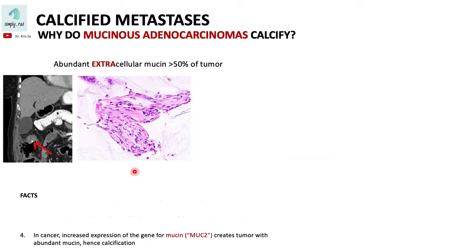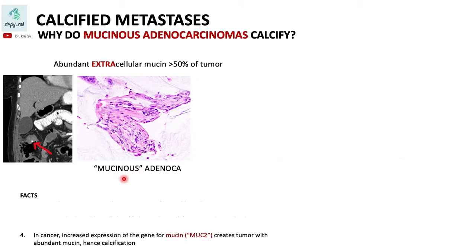So when the lining of the colon has a cancer or uncontrolled growth, a certain type of adenocarcinoma would have a large amount of extracellular mucin. When this extracellular mucin — shown here in pink — is so abundant as to comprise more than 50 percent of the tumor, it is called the mucinous adenocarcinoma.